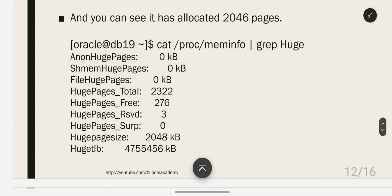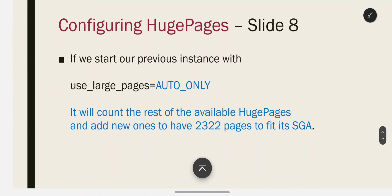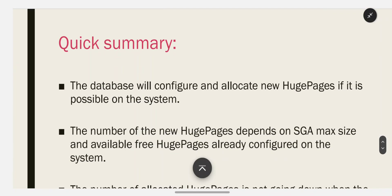Running cat /proc/meminfo | grep huge again confirms the values. When our previous instance with use_large_pages=auto_only starts, it counts the remaining available huge pages and adds new ones to reach 2322 pages to fit its SGA. In Oracle 19c, it is very easy — Oracle manages everything by itself; you just set the one parameter and huge pages are automatically used.